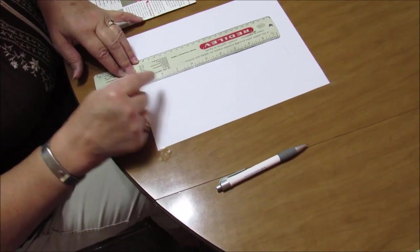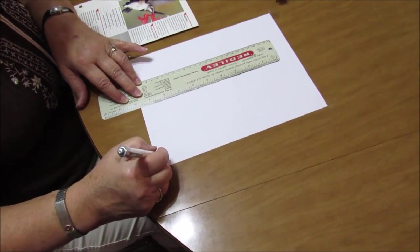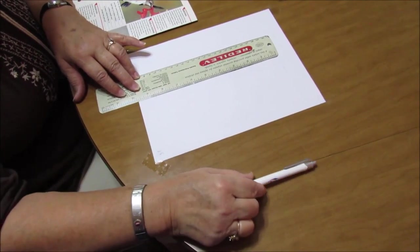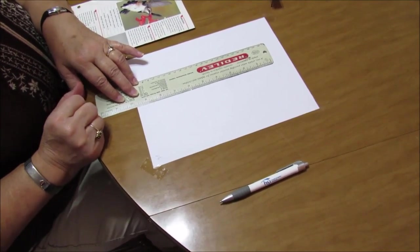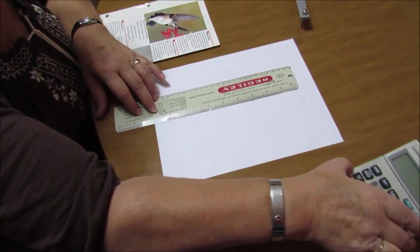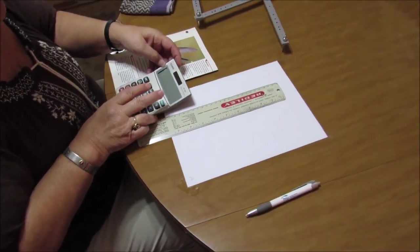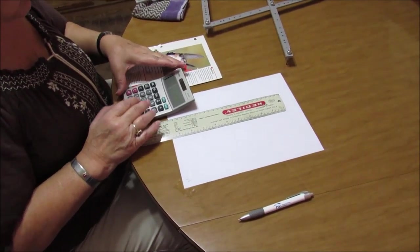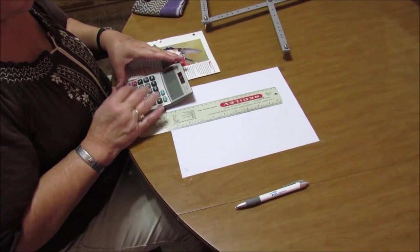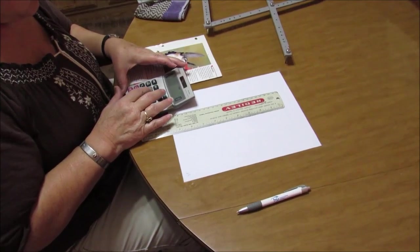Alright, write that down some place. Okay, then take your calculator. Divide the big number, eight and a half, by the small number, four and a half,